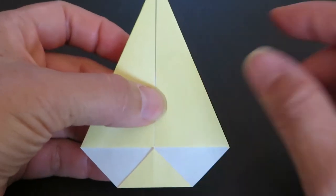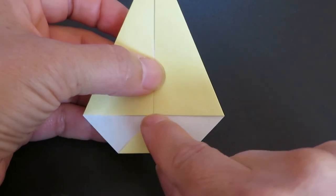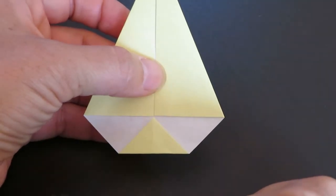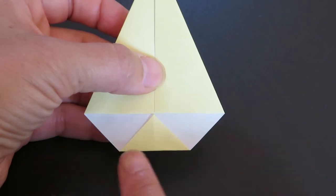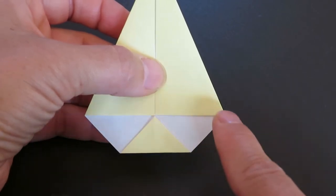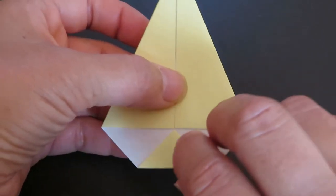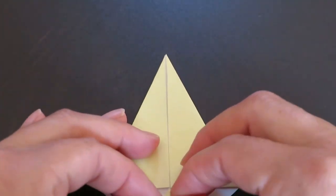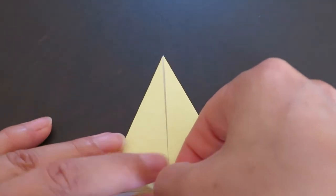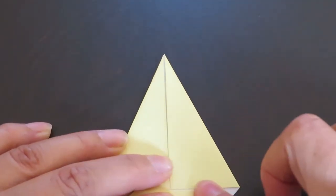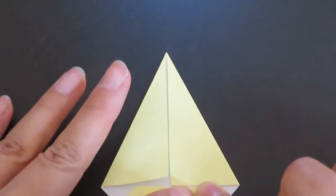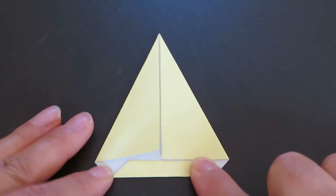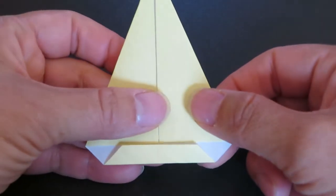Now can you see the top corner of the triangle touch here? Now match this bottom line with this line by folding up. Like this.